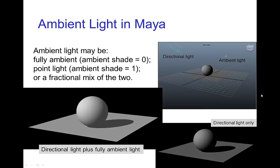In Maya, they have an option for an ambient light which actually has an adjustable parameter called the ambient shade. And if this ambient shade is set to zero, then it's a true ambient light that is uniformly illuminating from all directions.